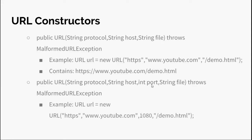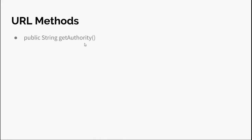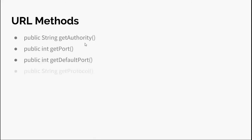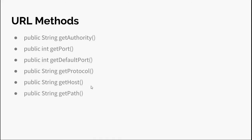URL methods include: getAuthority() which returns hostname plus port number; getPort() which returns the port number as an integer; getDefaultPort() which returns the default port of the protocol being used; getProtocol() which returns the protocol name; and getHost() which returns only the host, unlike getAuthority() which returns both host and port.